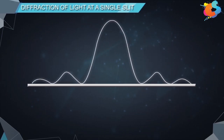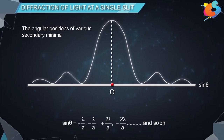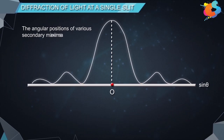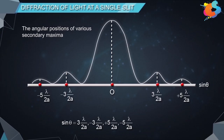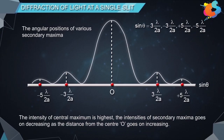The figure shows the intensity of the diffraction pattern for a single slit at various angular positions sin theta. The pattern has a central bright maximum at point O. The angular positions of various secondary minima are sin theta equals plus or minus lambda by a, plus or minus 2 lambda by a, and so on. The angular positions of secondary maxima are sin theta equals plus or minus 3 lambda by 2a, plus or minus 5 lambda by 2a, and so on. The intensity of the central maximum is highest, and the intensities of secondary maxima decrease as the distance from the central maximum increases.